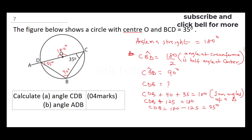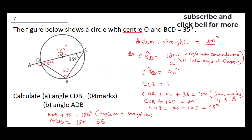The next part asks us to find angle ADB. Angle ADB plus 55 equals 180 degrees — the reason being angles on a straight line sum to 180. So angle ADB equals 180 minus 55, which gives us 125 degrees. As easy as that, you can attempt this question on angles.